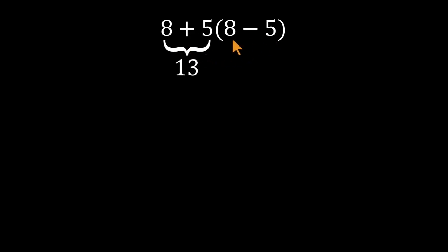Then they do the part in parentheses. 8 minus 5, that's 3. And finally, they multiply. 13 times 3 gives 39. It feels right at first glance, doesn't it?